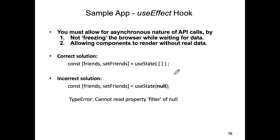The lesson is: you must allow for the useEffect hook performing an asynchronous task - in this case making the web API call. We must allow components to render potentially even though the data they depend on isn't available yet. We don't want the browser frozen waiting for API data, because the user can't interact with it while waiting.